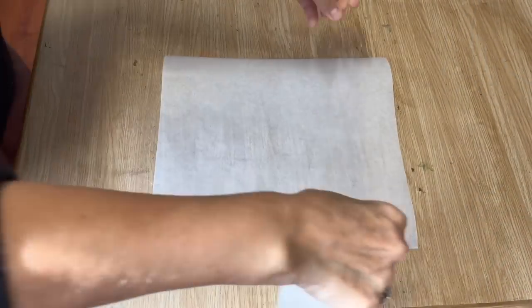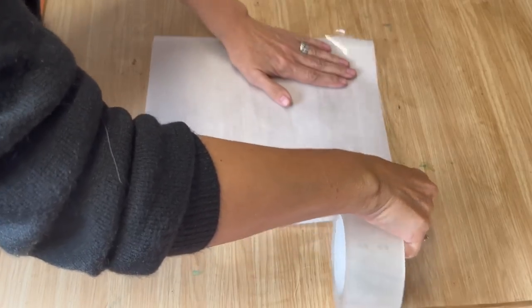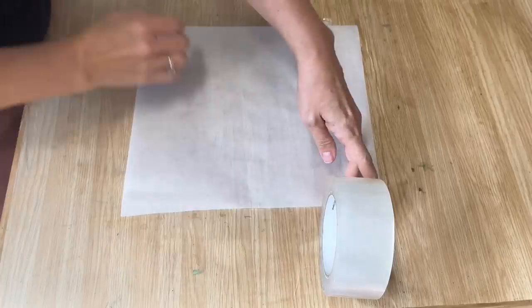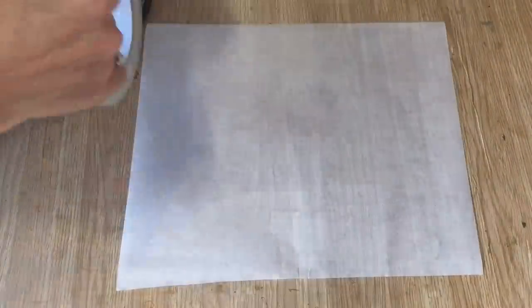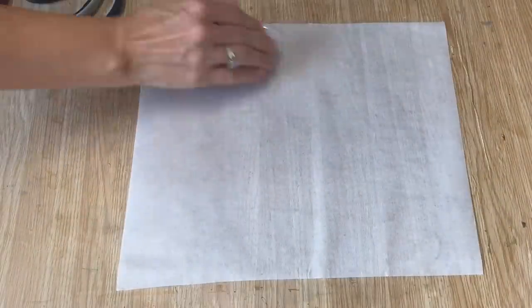First DIY project is DIY stickers. This is a piece of parchment paper - you can also use wax paper. Make sure that you're sticking your packing tape onto the waxy side and I'm just putting strips across that whole piece.